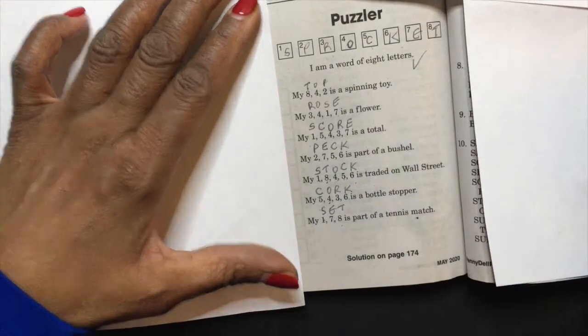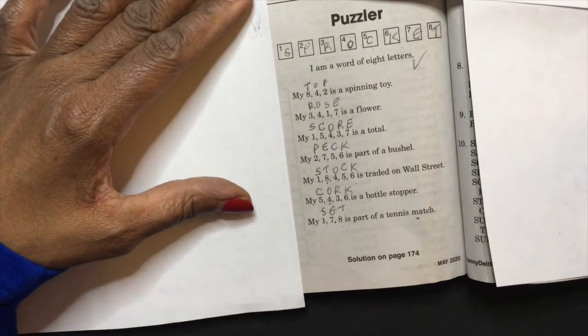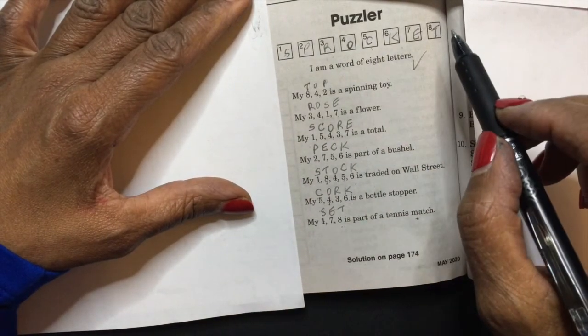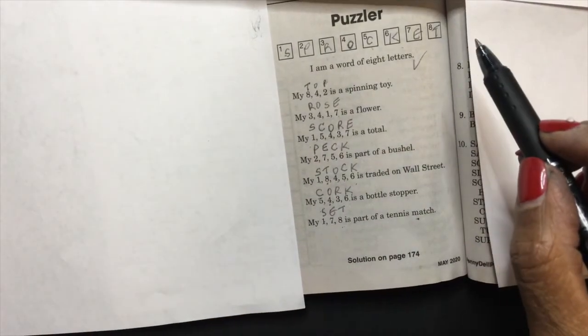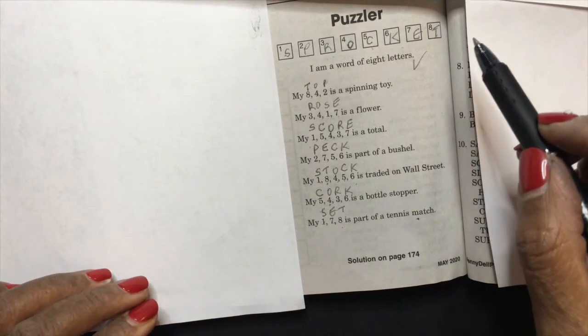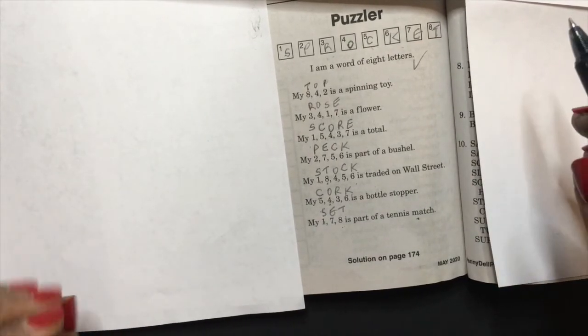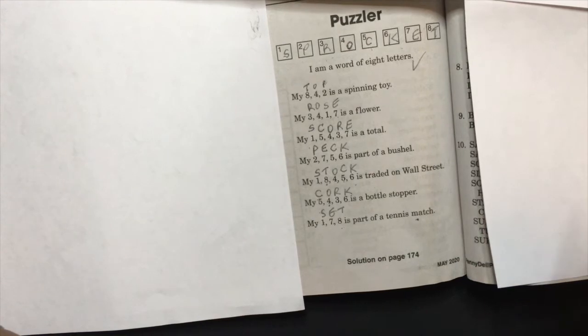have solved this puzzle. All right, that was easy breezy, wasn't it? So Puzzler—that's very easy from the Penny Press puzzle magazine. Thank you for watching, and I'll see you next time. And don't forget to subscribe to my channel. Thank you.